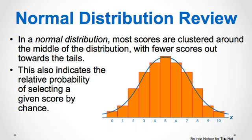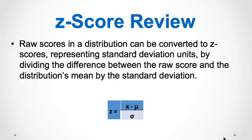In previous lectures, we discussed that normal distributions are very important to inferential statistics. All normal distributions are symmetric around its mean mu. They form bell-shaped curves with area equal to 1. They also are unimodal because their mean equals their median equals their mode. With normal distributions, most scores are clustered around the middle of the distribution with fewer scores at the tails. Raw scores in a distribution can be converted to z-scores, representing standard deviation units, by dividing the difference between the raw score and the distribution's mean by the standard deviation, or by dividing the difference between the sample mean and the distribution's mean by the standard error.